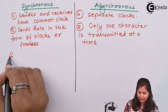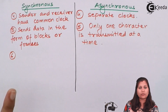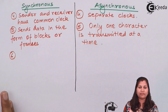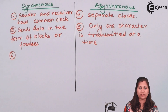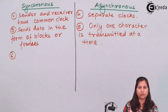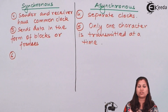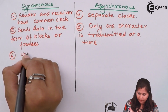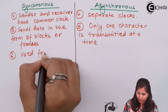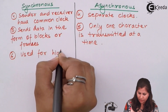The next difference is that the synchronous method has a very high speed of transmission, so it is used in cases where fast transmission is required. In that case, we use the synchronous method. Whereas in asynchronous, the speed of transmission is very slow.